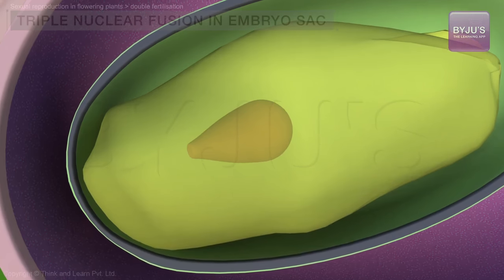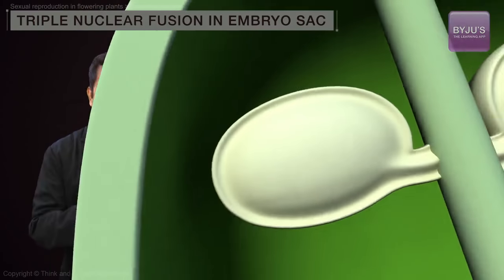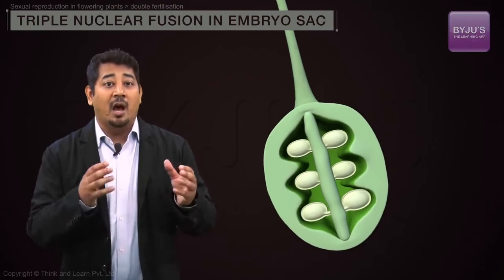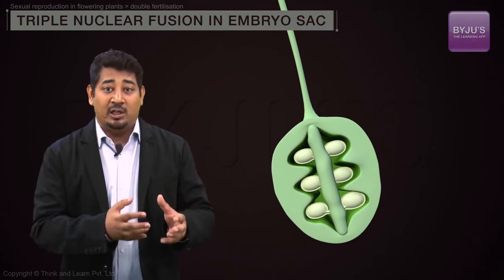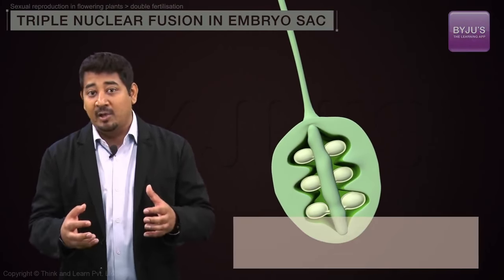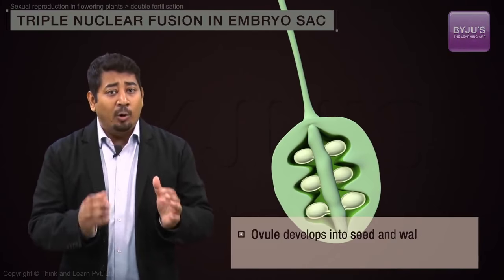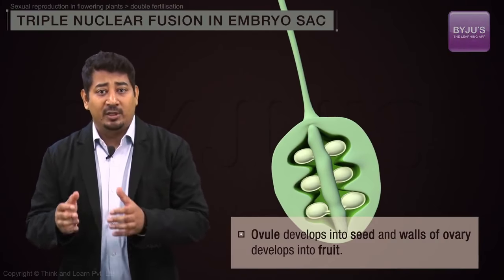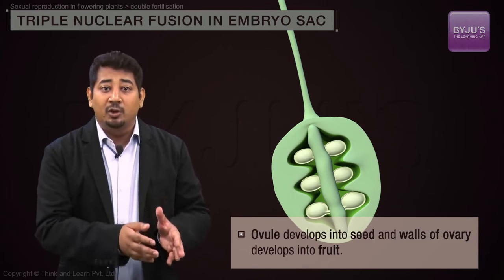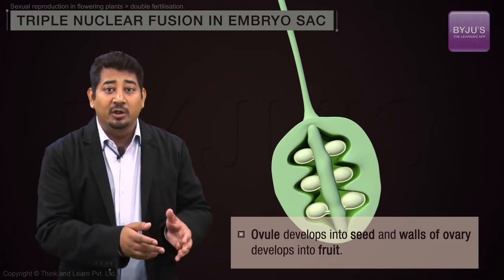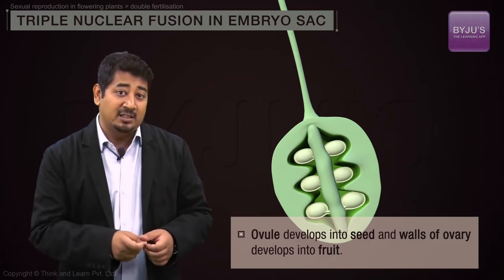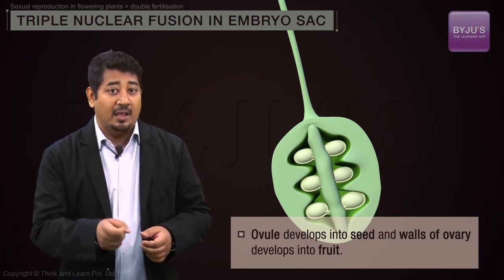Densely packed cells in the tissue around the ovule form the tough seed coat, an outer layer that protects the developing embryo from water loss and other damage. While the ovule develops into a seed, the walls of the ovary develop into a fruit, another structure that distinguishes angiosperms.